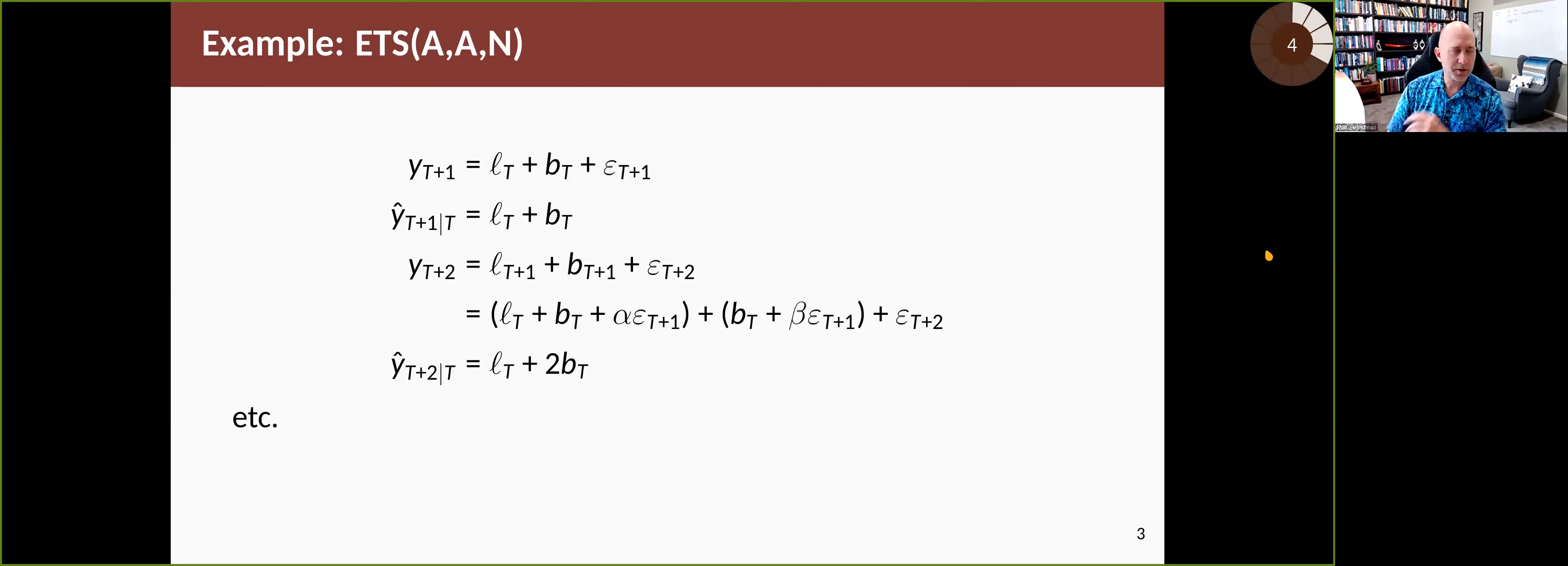Let's do a simple example using the model underpinning Holt's linear method when you have additive errors. We take the forecast equation, and for the first horizon after the end of the data set, time capital T plus one, the forecast will be the last observed level plus the last observed slope plus a new error term.